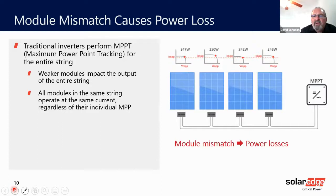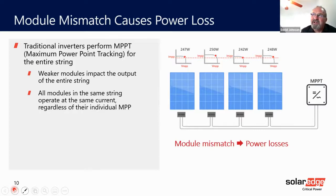The analogy we like to use: think of four kids running while holding hands. The first one's two years old, the second is four, the third is six, and the fourth is eight. As they run together, they can only run as fast as that two-year-old. That's the problem with module mismatch.